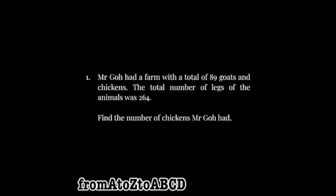Mr. Goh had a farm with a total of 89 goats and chickens. The total number of legs of the animals was 264. Find the number of chickens Mr. Goh had. Okay, so for this question, you need to first understand that goats will have 4 legs.